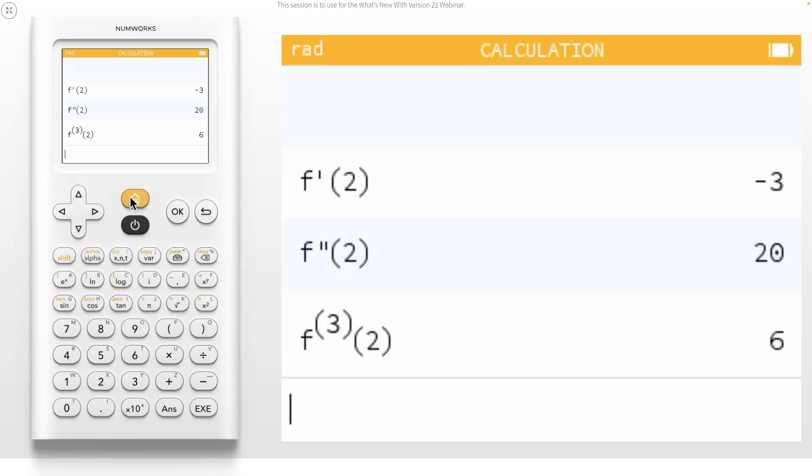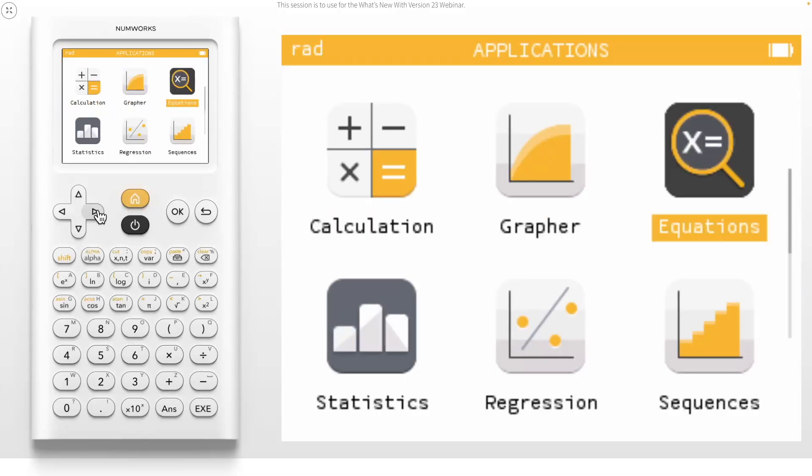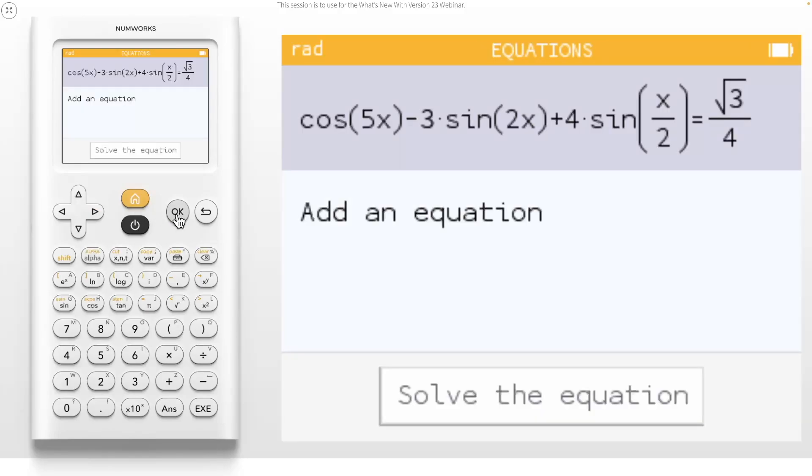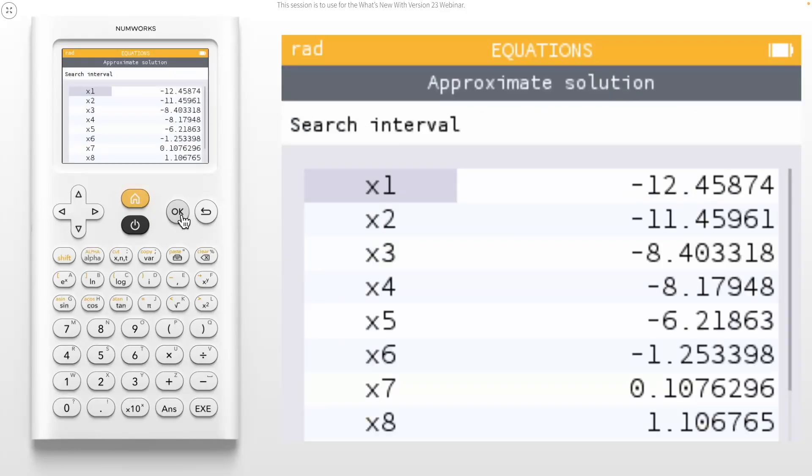For the last update we will review, let's head to the equations application. We already have a trigonometric equation entered in for this example. When we solve advanced equations like the one entered here, we now automatically create a search interval without the user needing to select it every time. You can edit the search interval for solutions if the auto interval is not preferred.